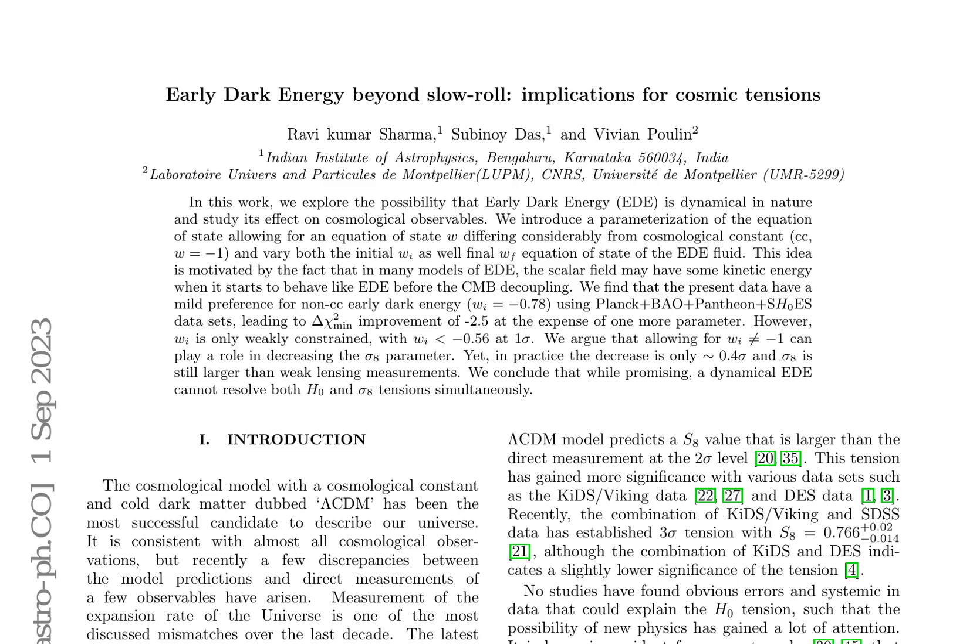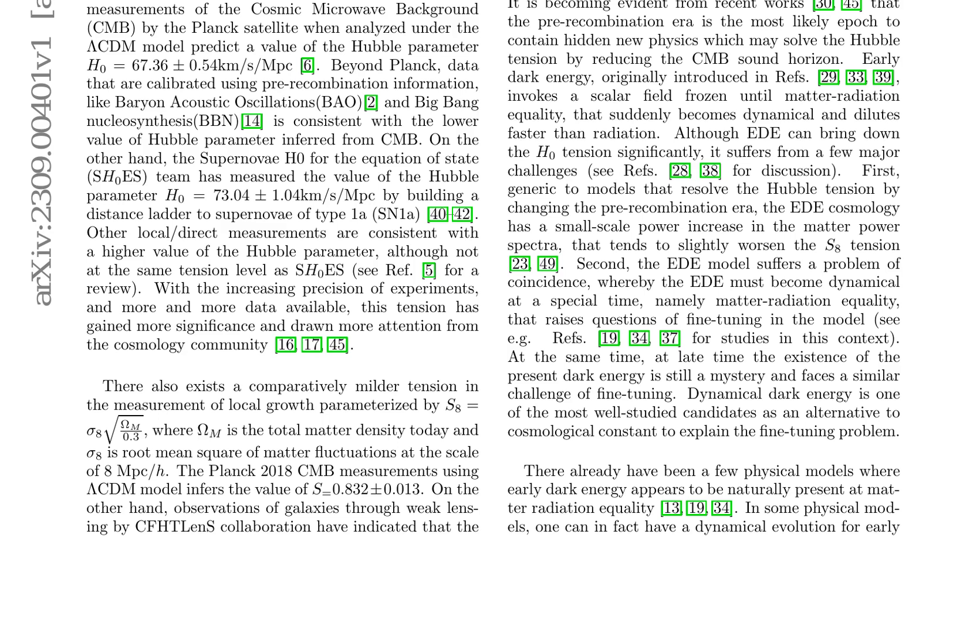The paper delves into the potential of early dark energy (EDE) being a dynamic entity and its implications on cosmological observables. It introduces a parameterization of the equation of state, allowing for W that differs from the cosmological constant W equals negative 1. The authors discover that present data exhibit a mild preference for non-sea early dark energy with WI equals 0.78, leading to a delta chi-squared improvement of 2.5 at the expense of one more parameter.